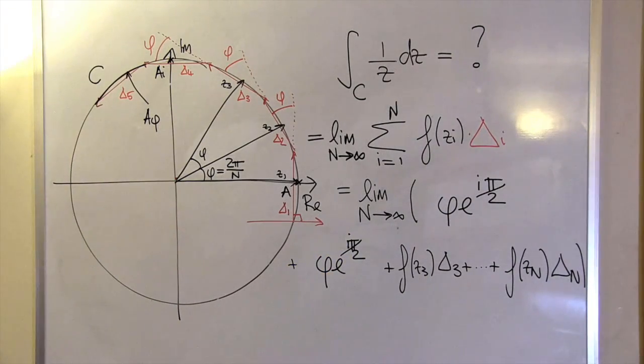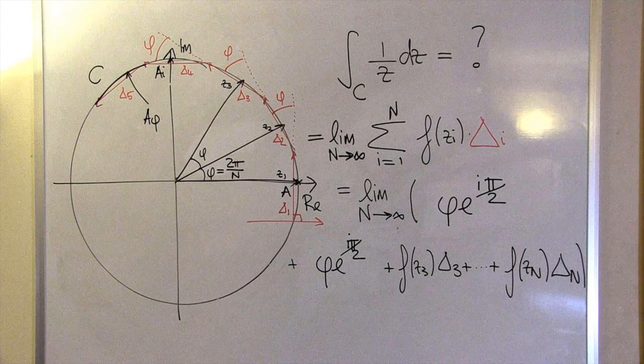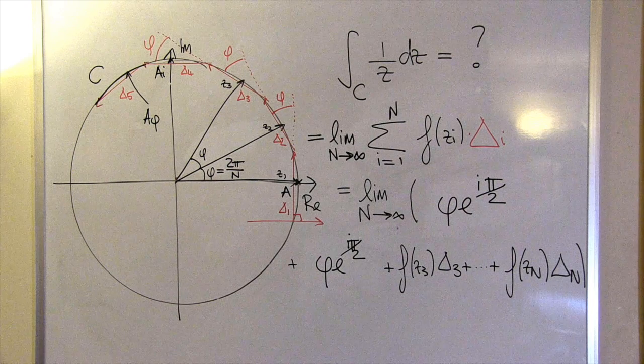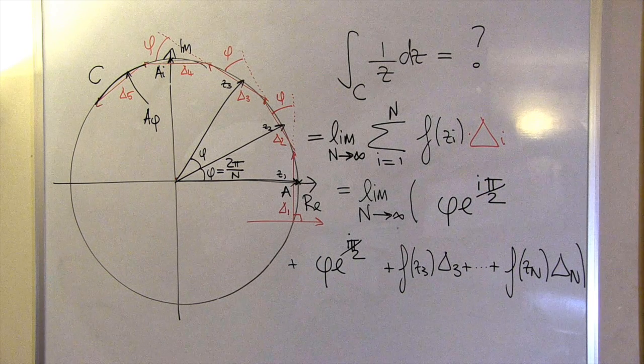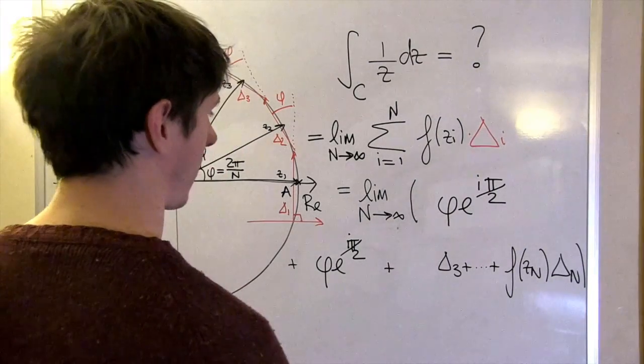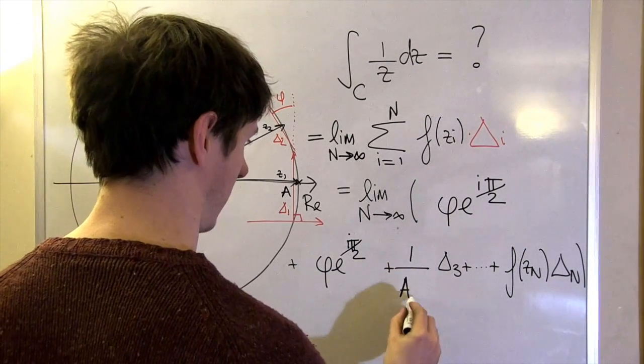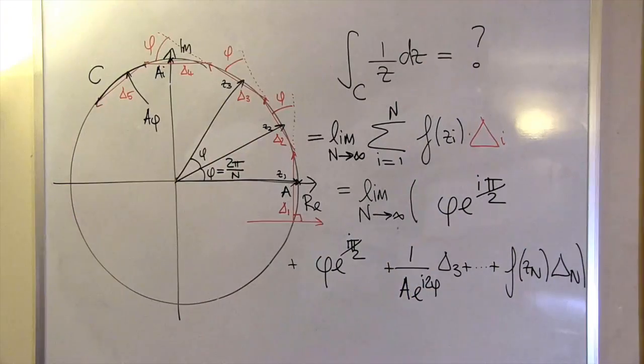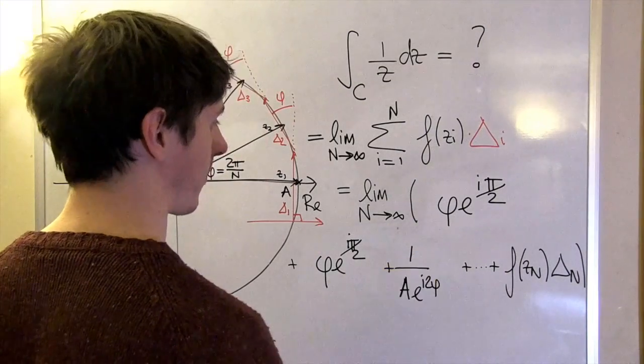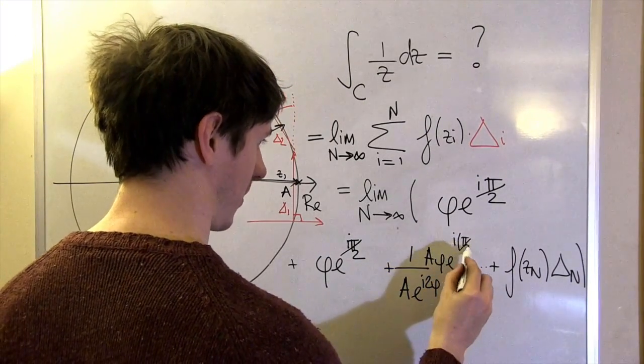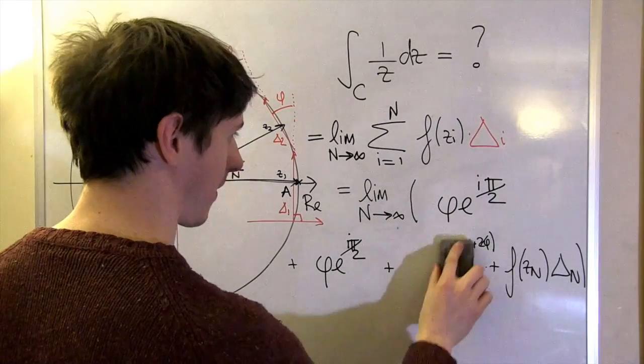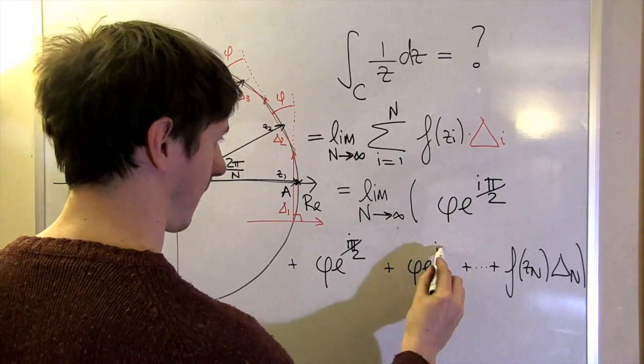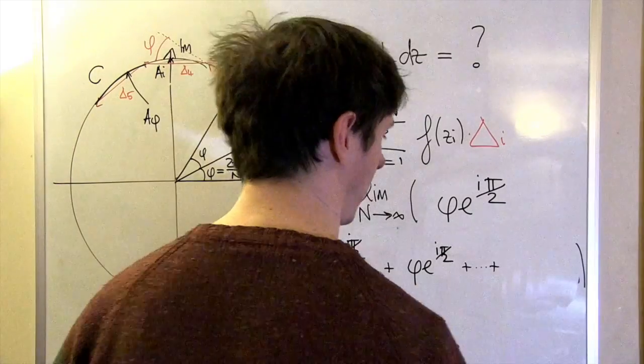Surely we can only dream that the same thing is going to happen to the third term. The magnitude of both f of z3 and delta 3 are the same as they were before, but z3 is another phi radians around the circle from z2, so that makes e to the i 2 phi. But delta 3 also increases its angle by phi. We get the same things cancelling this time to get phi times e to the i pi over 2. And the same is true all the way along, right up until the nth term.